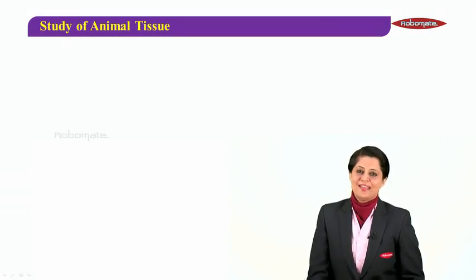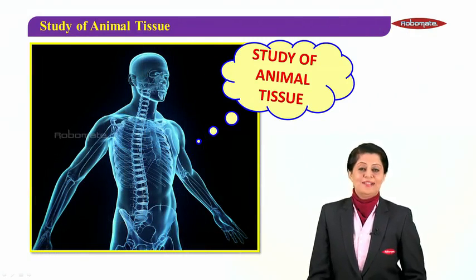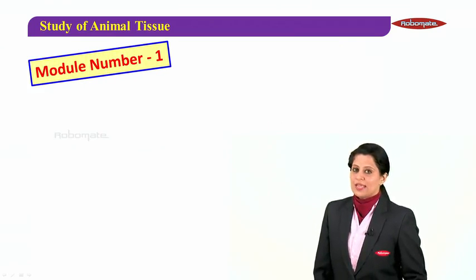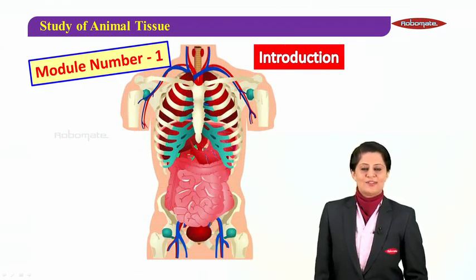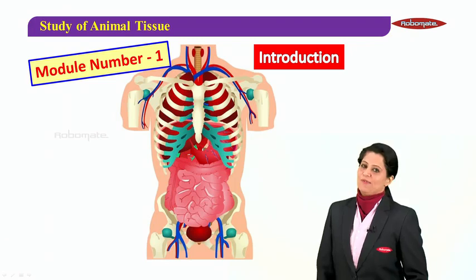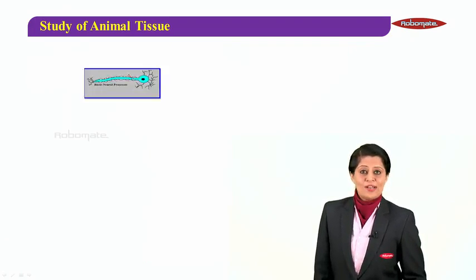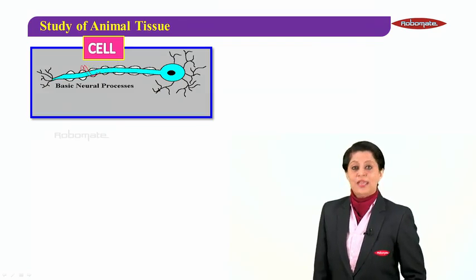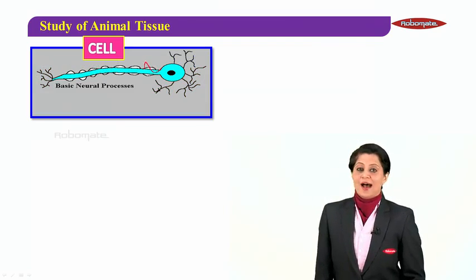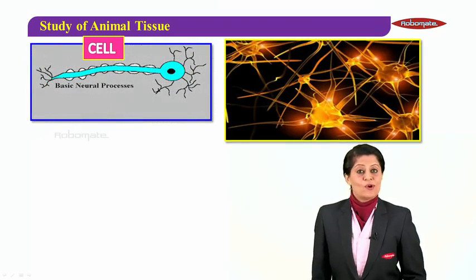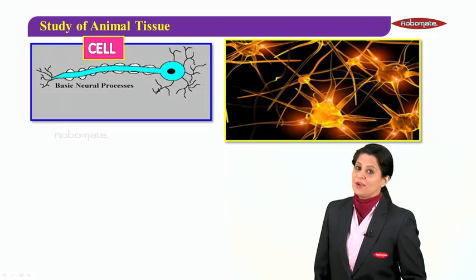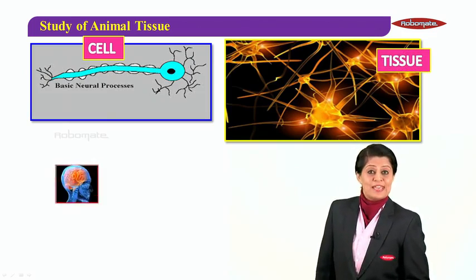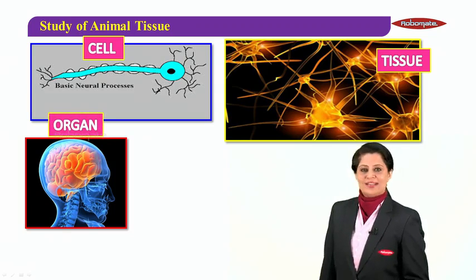Hello students, today we are dealing with the chapter 'Study of Animal Tissues,' a very interesting chapter. In this module, we are doing the introduction and basics of the chapter. Watch this picture — it's a single cell, which is actually a neuron of your body. Now, groups of such cells that join together we call a tissue.